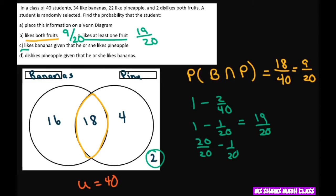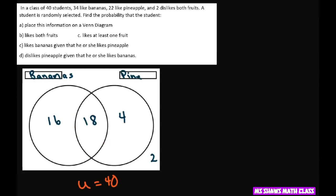All right. For the last two, we want to find the probability of like bananas given that he or she likes pineapple. So the bananas given the pineapple, what you want to do is probability of B and P divided by probability of P, pineapples.